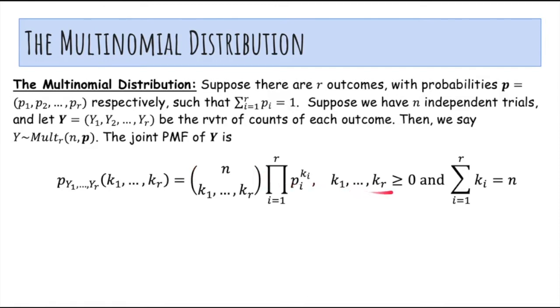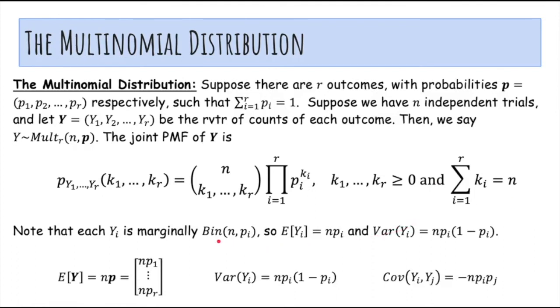So notice that all the counts have to be non-negative, and the total sum of the counts should be n, which is the total number of trials. So notice that each Y_i is marginally binomial because for each outcome, either it occurs or it does not occur, so you have success or failure.